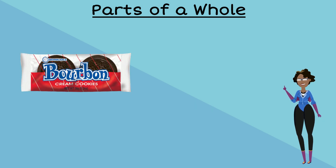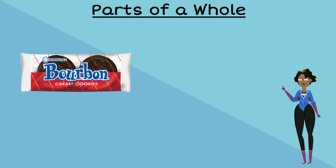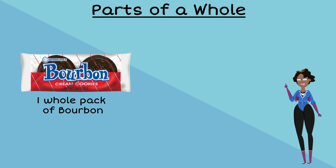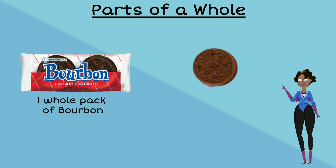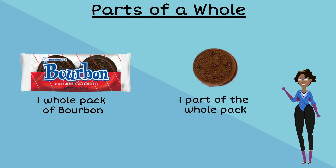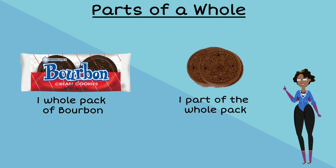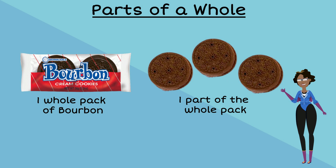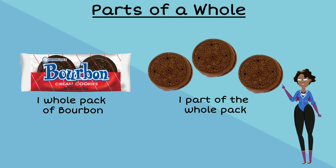In a four pack of Bourbon biscuits, we can look at the entire pack as the whole. Any piece or portion of a pack that is taken is a part of the whole. If Raquel takes three and shares one with a friend, they each have a part of the whole.